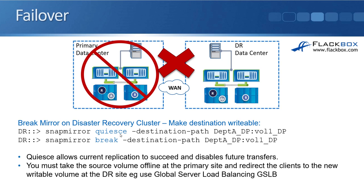You might wonder how a transfer could still be running — maybe the first site hasn't actually been lost. For example, weather reports predict terrible weather and possible flooding, so as a precautionary measure we're going to fail over to the DR site with both sites still online. We use the SnapMirror quiesce command and if a transfer is running it will allow it to complete then pause future transfers. Even if you have actually lost the primary site, still run SnapMirror quiesce first. Once that's done, the next command is SnapMirror break, again specifying the destination path.